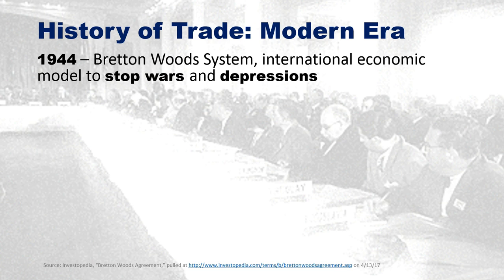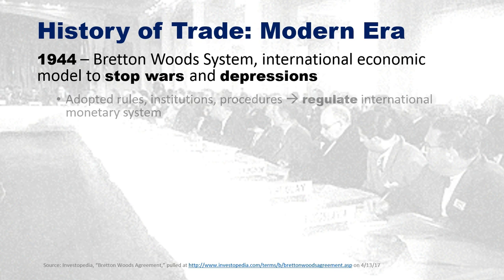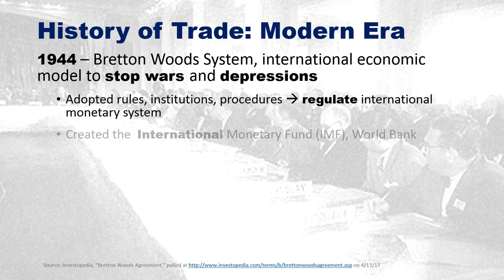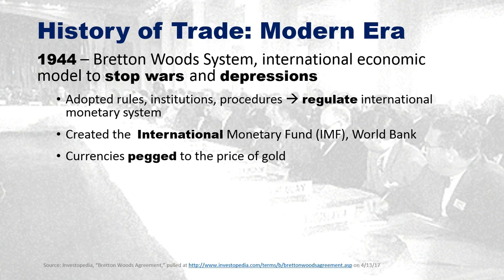In 1944, the Bretton Woods system and an international economic model was developed to stop wars, coming on the heels of World War Two. The powers recognized that cycles of war and depression were incredibly costly in human lives and economic vitality. They adopted rules, institutions, and procedures to regulate an international monetary system so that nations exchanging goods had a way to manage money crossing borders. This led to the creation of the International Monetary Fund (IMF) and eventually the World Bank.